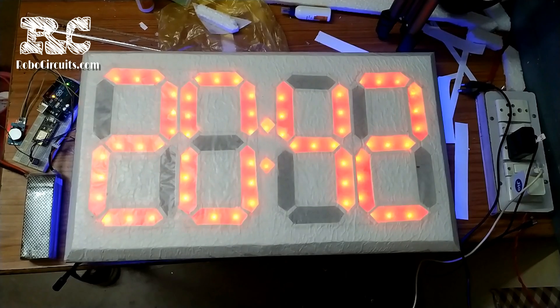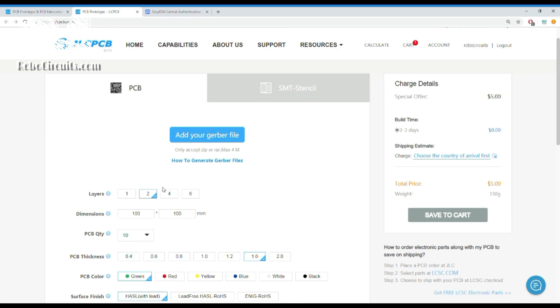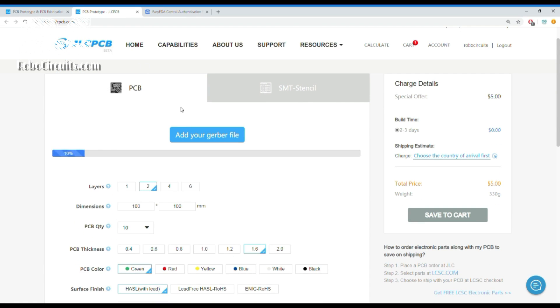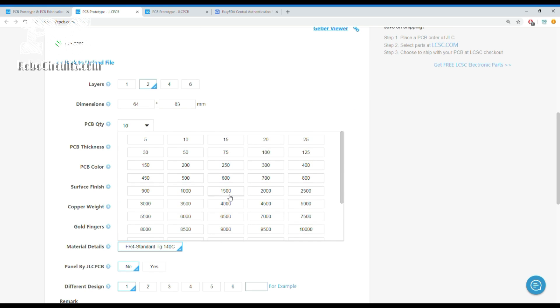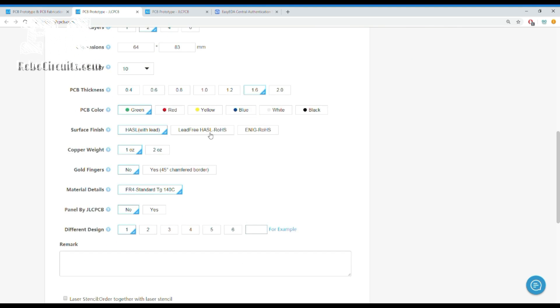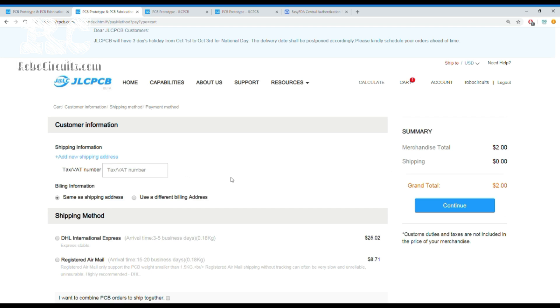Now I designed a PCB for a similar board and went to jlcpcb.com. Then I uploaded my Gerber files, selected my quantity to 10 and the color, added them to cart, selected my address, and paid using PayPal.